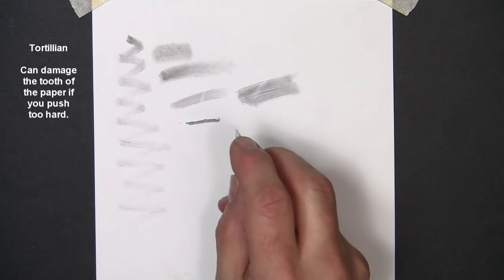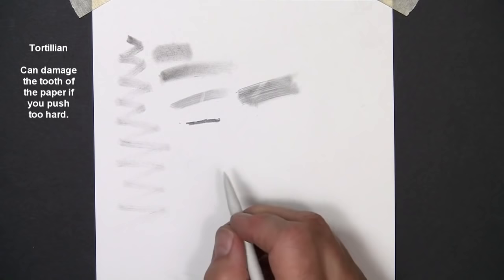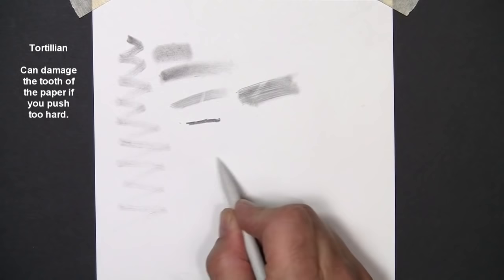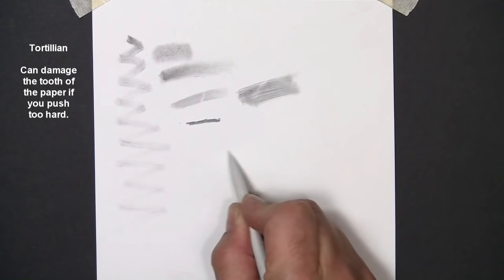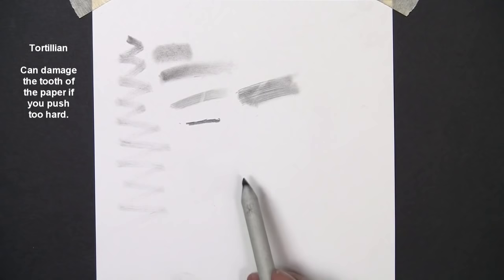So many times in my workshops, I see people that get used to using a tortillion, and they just really damage that paper. You hear lots of scratchy noises like that, and the paper can actually end up getting damaged to where when you try to go over it with something else, that part of the damaged paper ends up not acting like the rest of the paper.